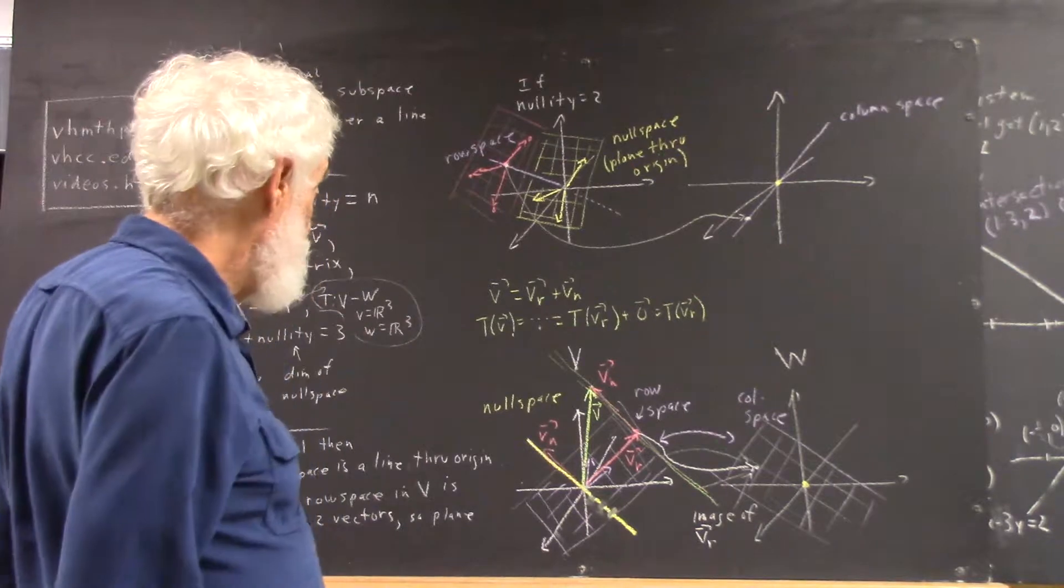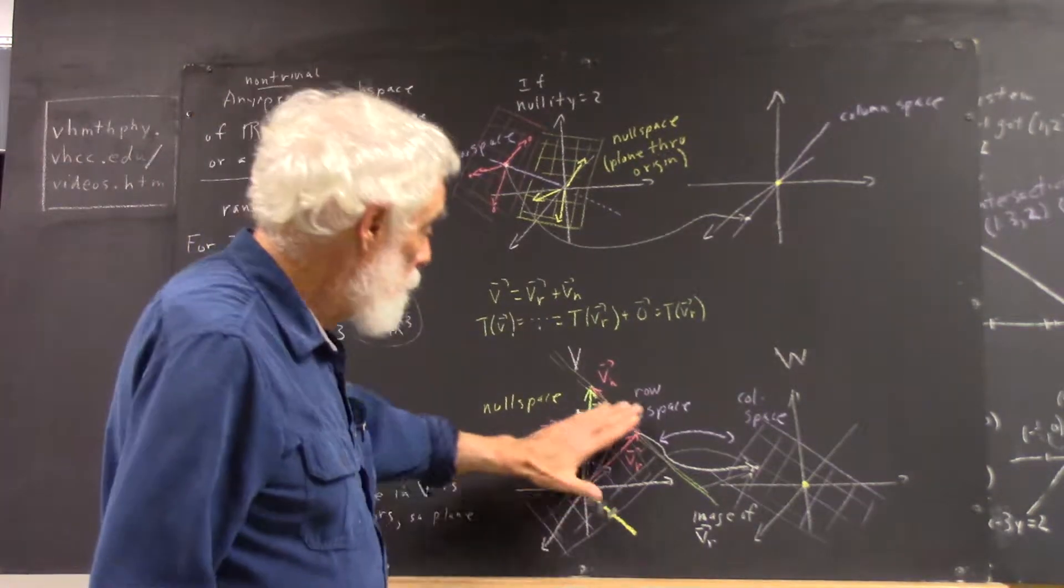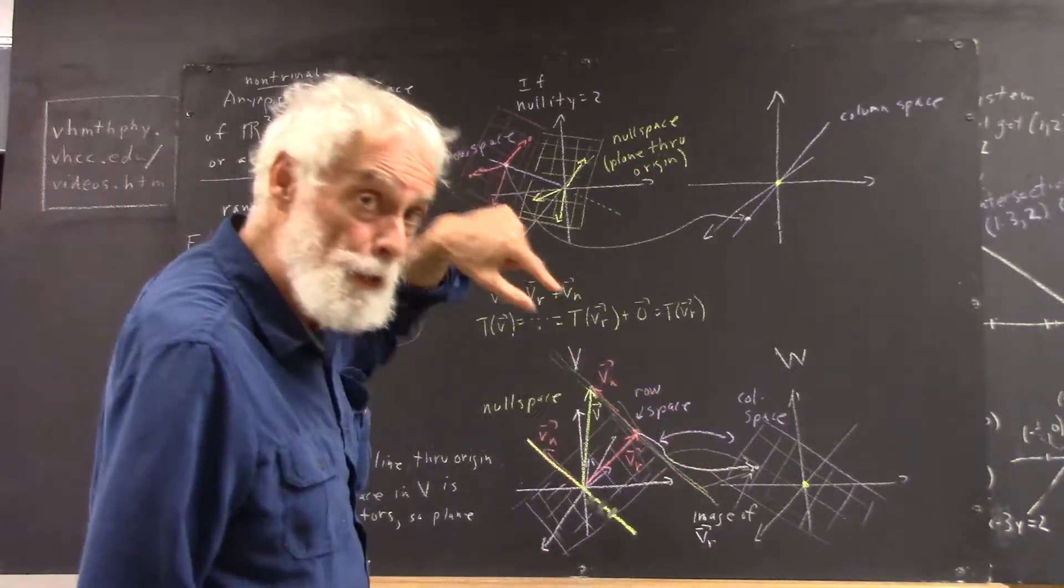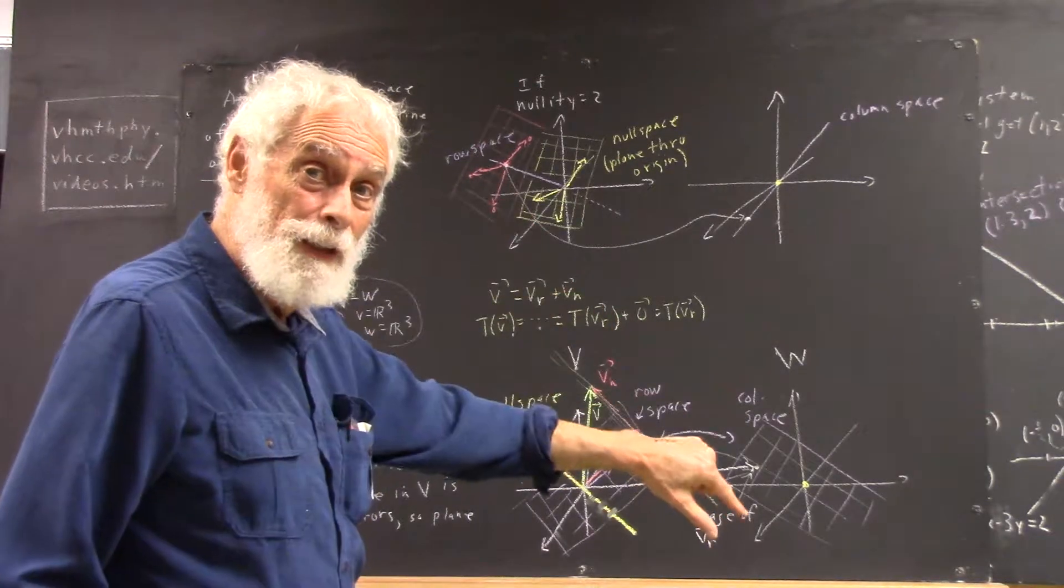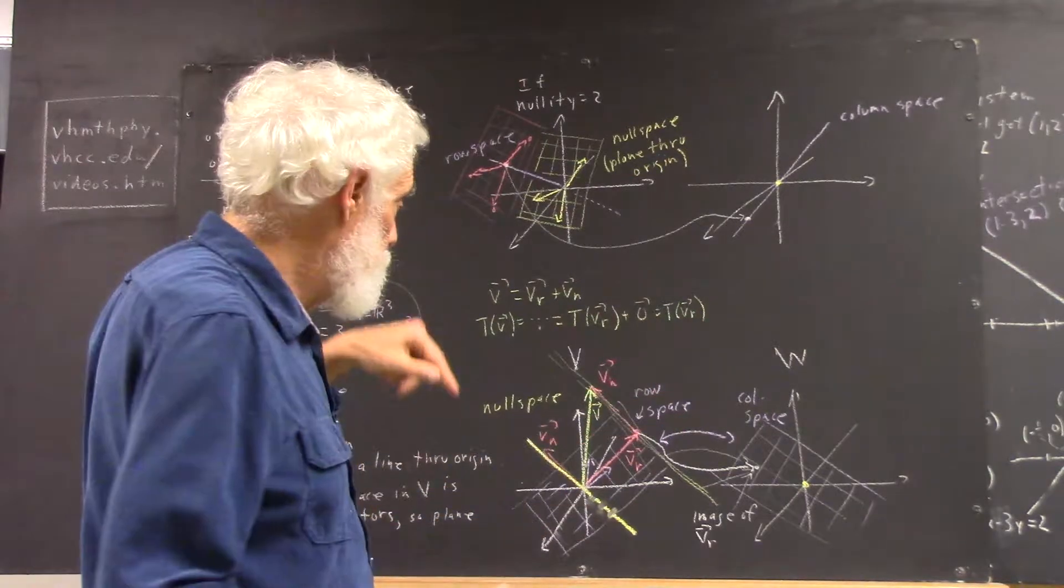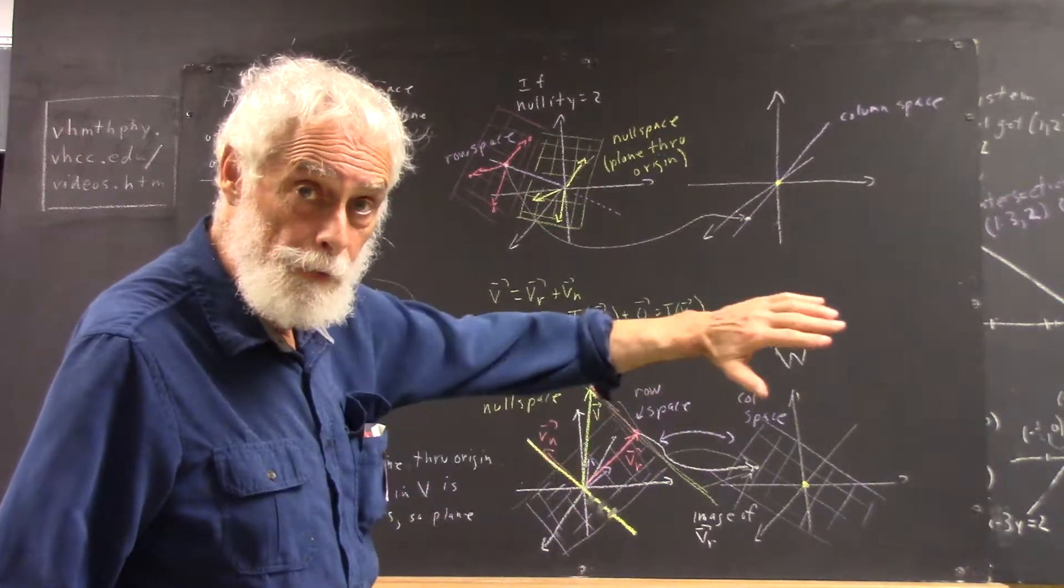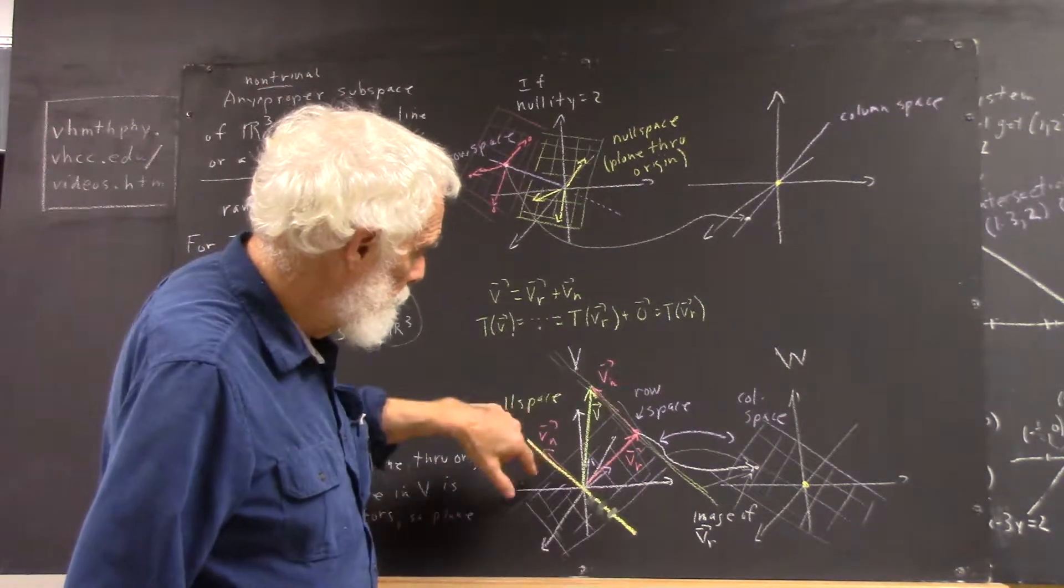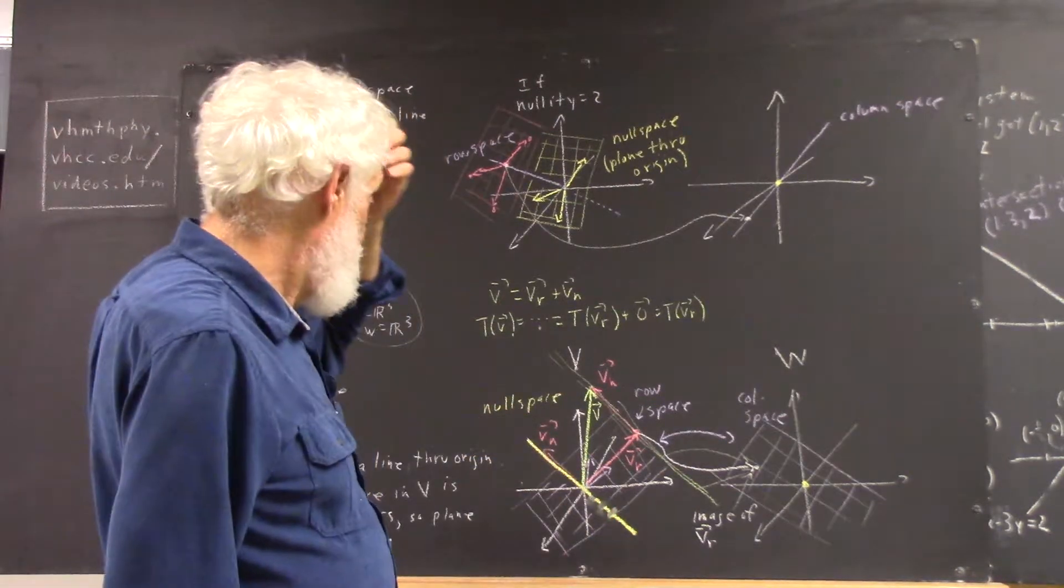So what you then have is a null space and a row space. Row space is some plane. The null space has some direction. And the null space is going to be perpendicular to the row space because it's easy to prove that the null space is always orthogonal to the row space. So you can think of this vector and this plane as being at right angles.